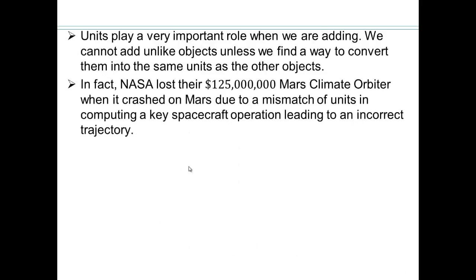One of the things that happened in 1999 is NASA lost their $125 million Mars climate orbiter when it crashed on Mars due to a mismatch of units in computing a key spacecraft operation, which led to an incorrect trajectory and led the orbiter to crash on Mars.